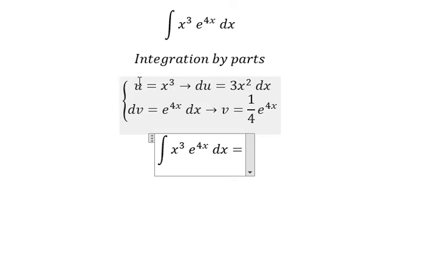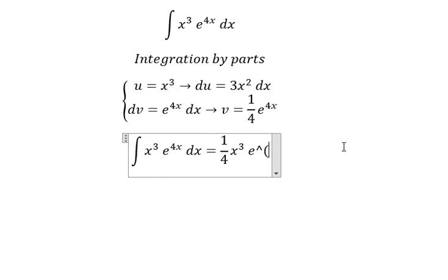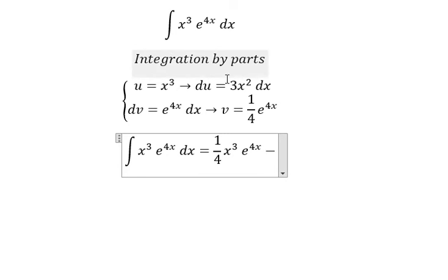So applying the integration by parts formula, we have u multiplied by v minus the integral of v multiplied by du.